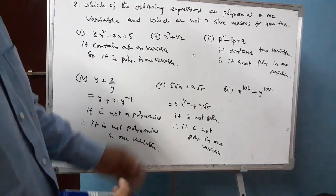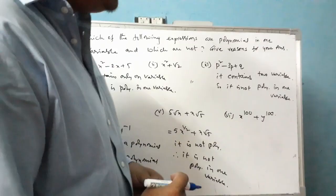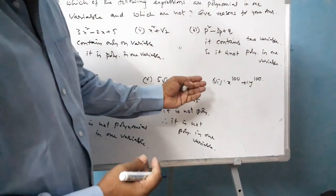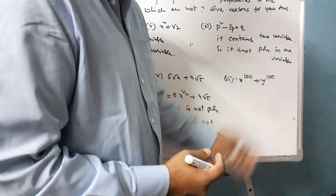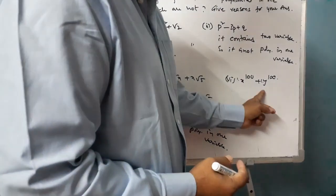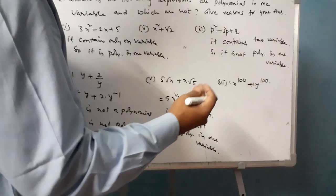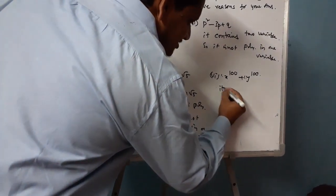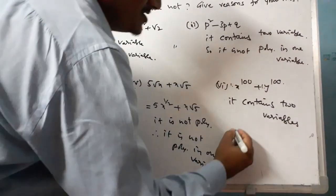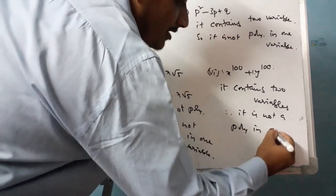Sixth expression: x to the power of 100 plus y to the power of 100. The coefficients are 1 and 1, which are real numbers, and the powers 100 and 100 are non-negative integers. So it is a polynomial, but it contains two variables x and y. Therefore, it is a polynomial but not a polynomial in one variable.